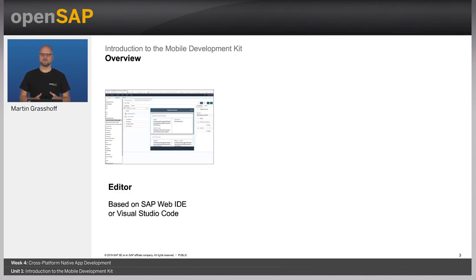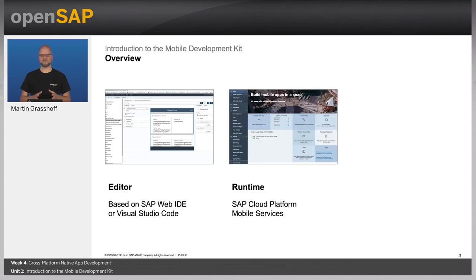Mobile Development Kit contains three parts. The first is the editor — this is where you build your MDK-based application. You have two options: one is the plugin within the Web IDE, and the other is an extension to the Visual Studio Code editor that you can install on your local developer machine. The second part is the runtime, where MDK applications will be distributed from and where the client on the device will connect to. Here you have features like log upload, offline synchronization, and the like.